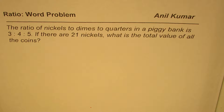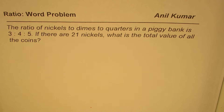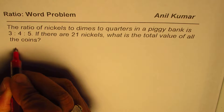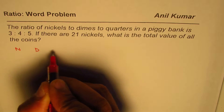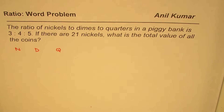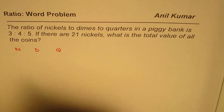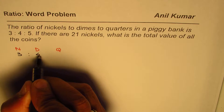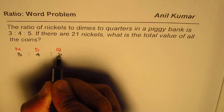I'm Adil Kumar and here is another very popular word problem on ratios. The ratio of nickels to dimes to quarters in a piggy bank is 3 is to 4 is to 5.